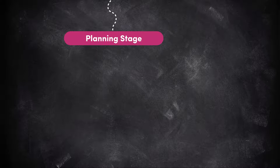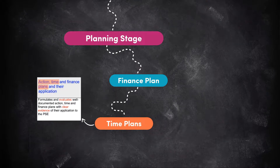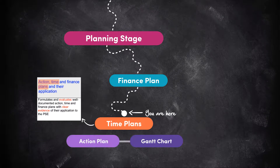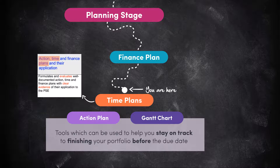Hey guys and welcome back. Today we are going to be continuing on the planning part of our portfolio journey, moving from the finance plan to the time plan syllabus dot point. We're going to be breaking up the time plans into two sections: the action plan and the Gantt chart. Both are tools which can be used to stay on track to finishing your project and portfolio before the due date, which is easier said than done.